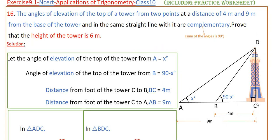So here this is a tower and from the base of the tower if you take two points in the same line, this point B is at the distance of 4 meters and A is at the distance of 9 meters. From C to A is 9 meters, from C to B is 4 meters.